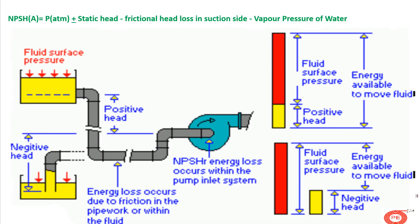Now let's see with the help of a sketch how to calculate the values. The complicated formula from the last slide is simplified here. P_atmosphere corresponds to HA; the static head corresponds to HS (plus or minus); HF is the frictional loss (minus). HV is a very small value that designers neglect and don't consider while calculating NPSH. The last term is HVP — the vapor pressure of the liquid.